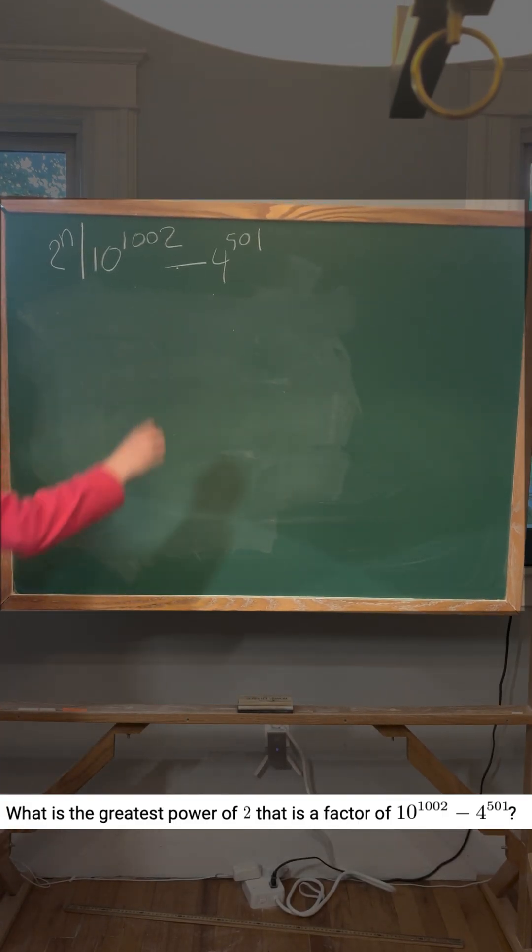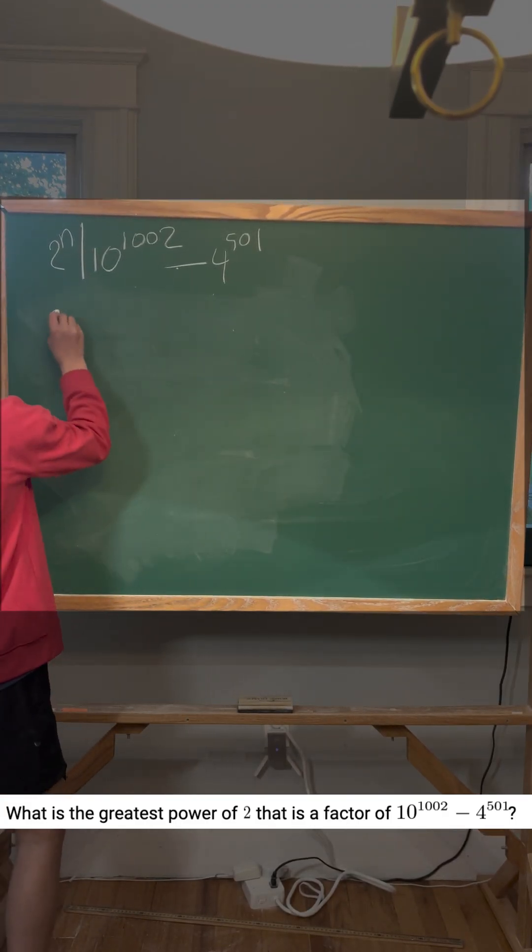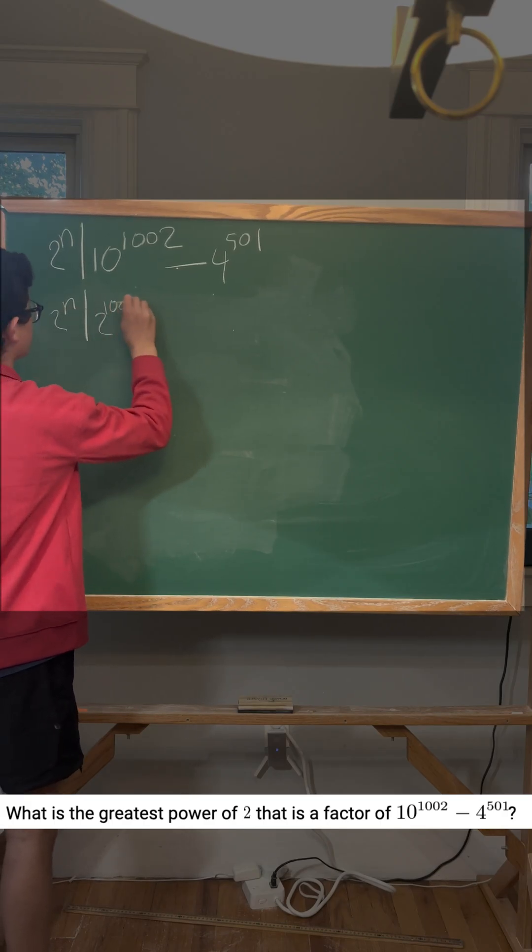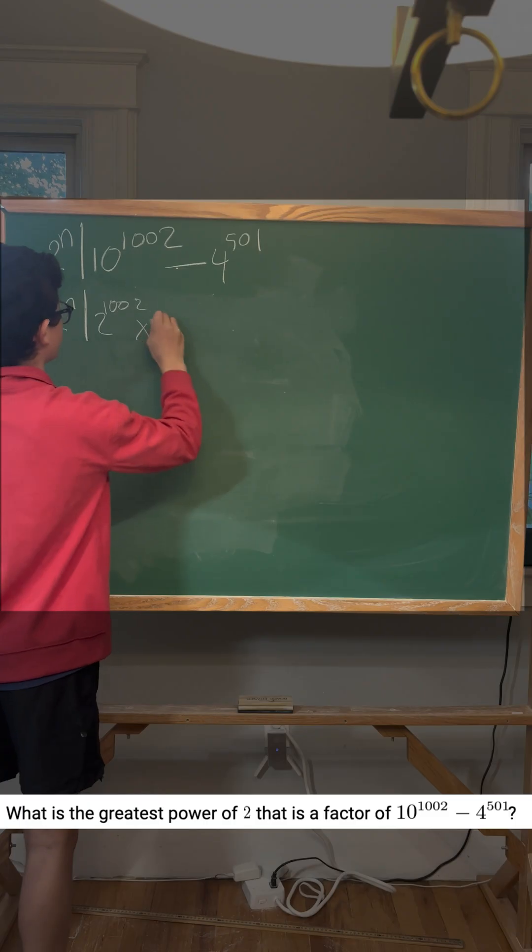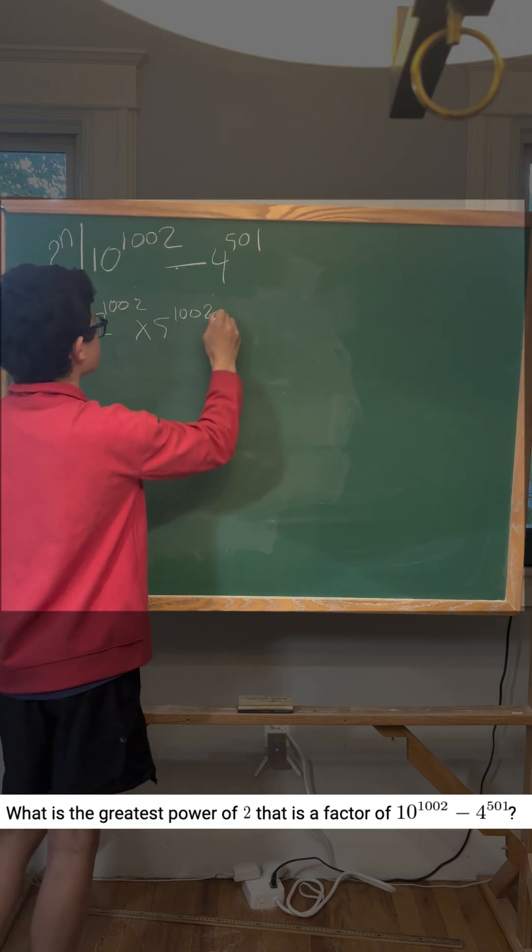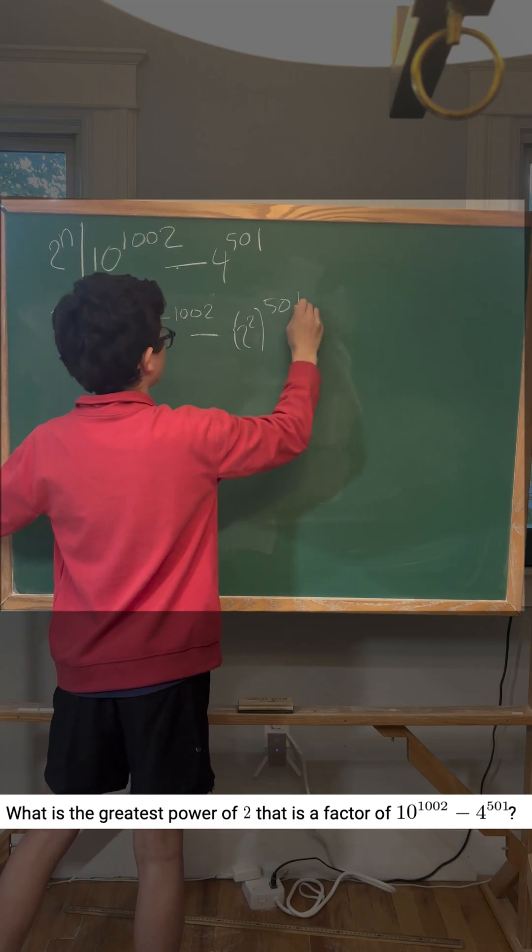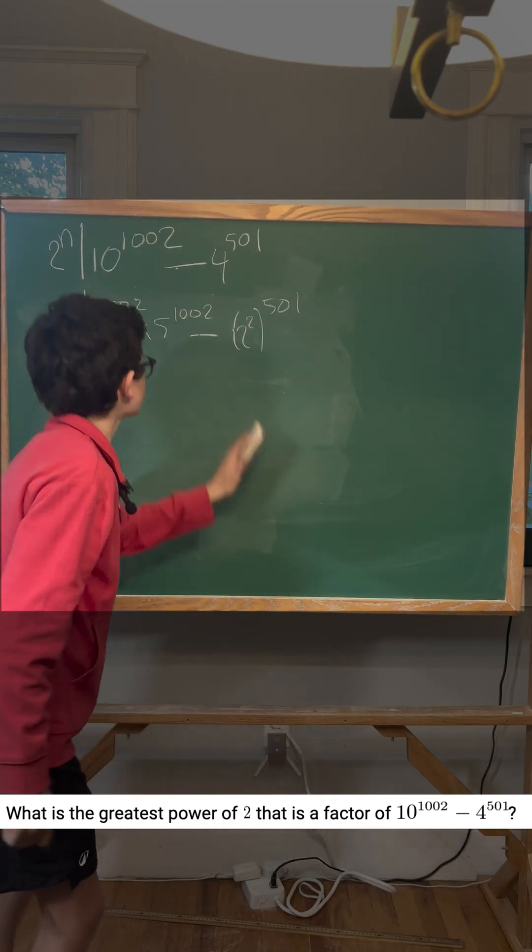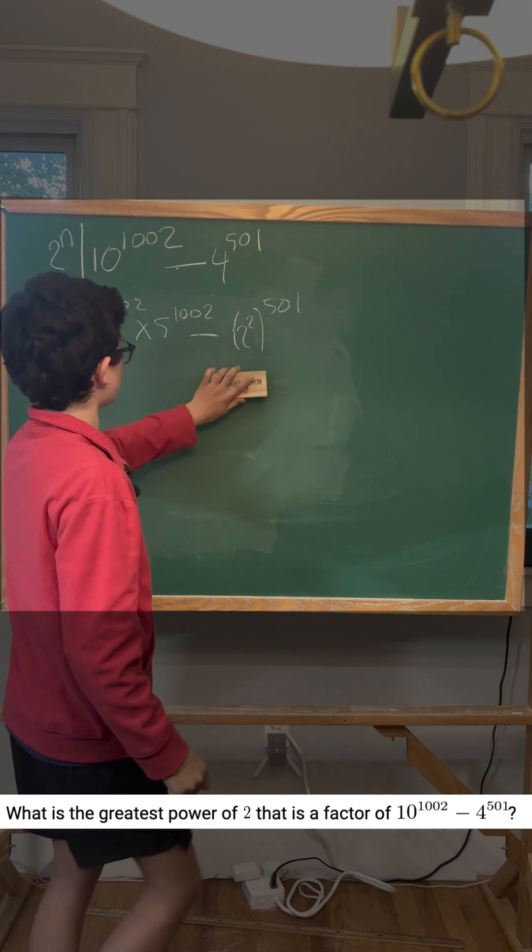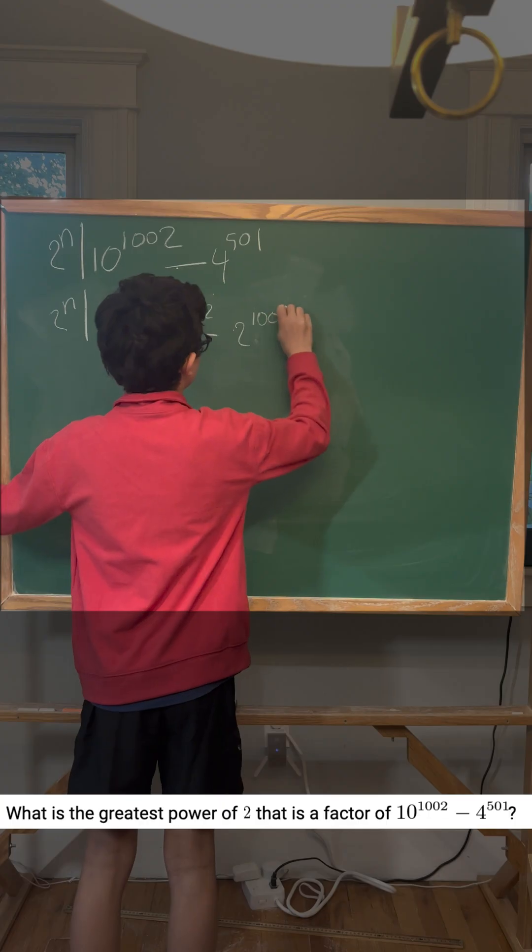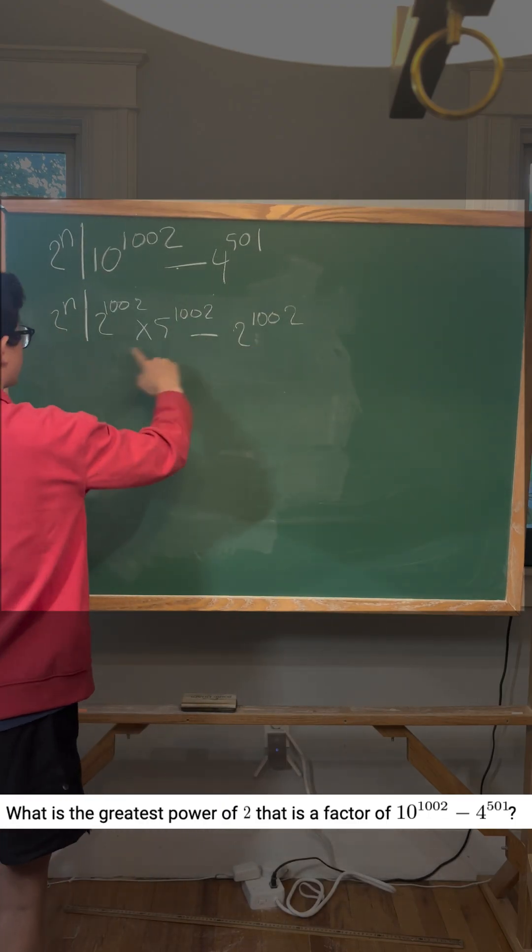Okay, so now we're going to factorize this expression. If you do the same thing as writing 2^n divides 2^1002 times 5^1002 minus 2 squared to the 501st. And this right here is the same as writing 2^1002. So we can factorize this.